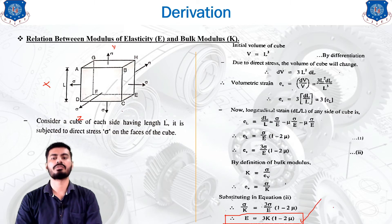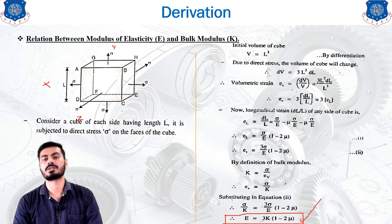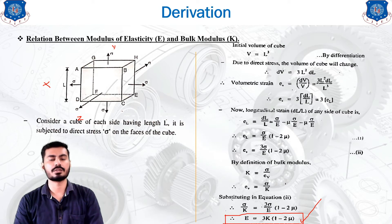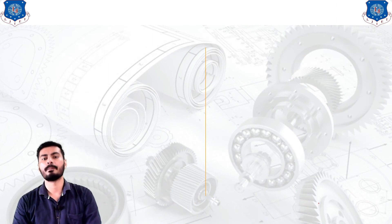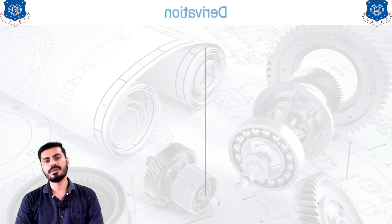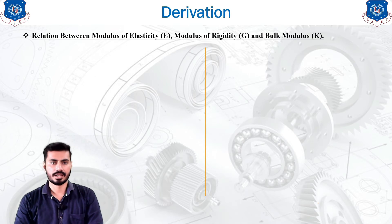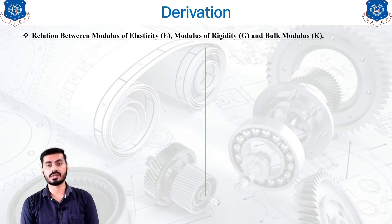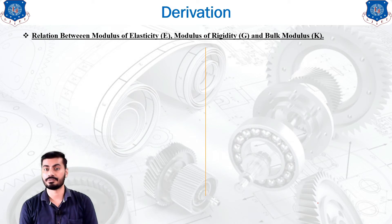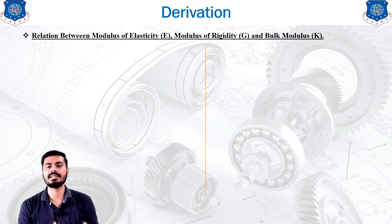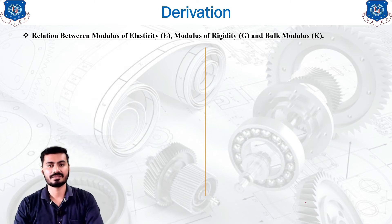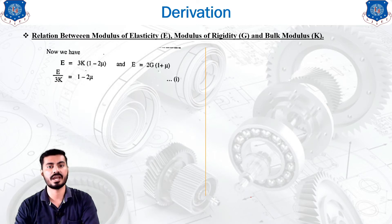This is our final answer for the derivation of the relationship between Young's modulus and bulk modulus. This can be asked in your examination for five to seven marks and you need to write your answer according to the marks given. Now we will see another derivation — the relation between modulus of elasticity E, modulus of rigidity G, and bulk modulus K, which are the three basic elastic constants.